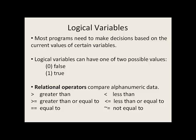In most programs that you'll write, you'll need to make decisions based on the current values of certain variables. Logical variables can be very useful for this and they can have one of two possible values: 0 for false or 1 for true.